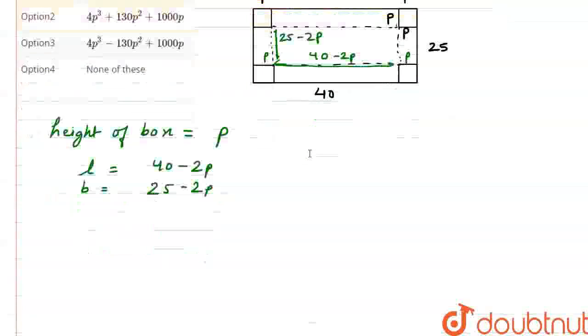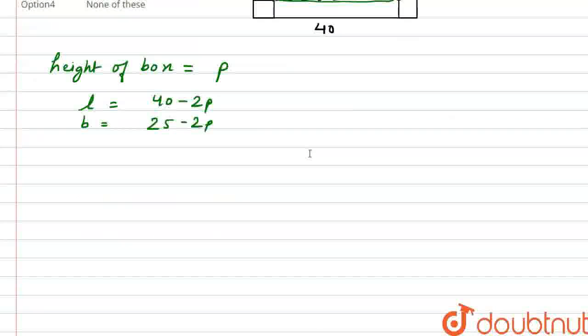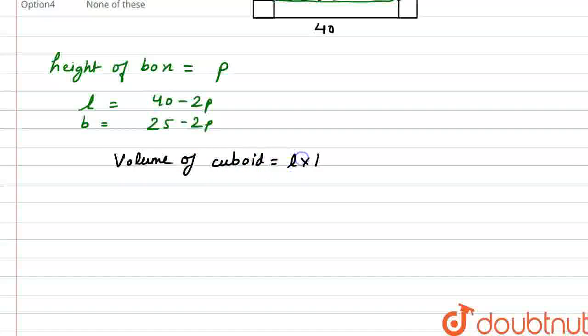Now, we can simply find out volume. And we know that formula for volume of a cuboid. This is length into breadth into height. So, if we use this formula, volume of the box. Length is 40 minus 2P. Multiply by breadth is 25 minus 2P. Multiply by height is P. So, first, let's solve these two brackets. 40 into 25.